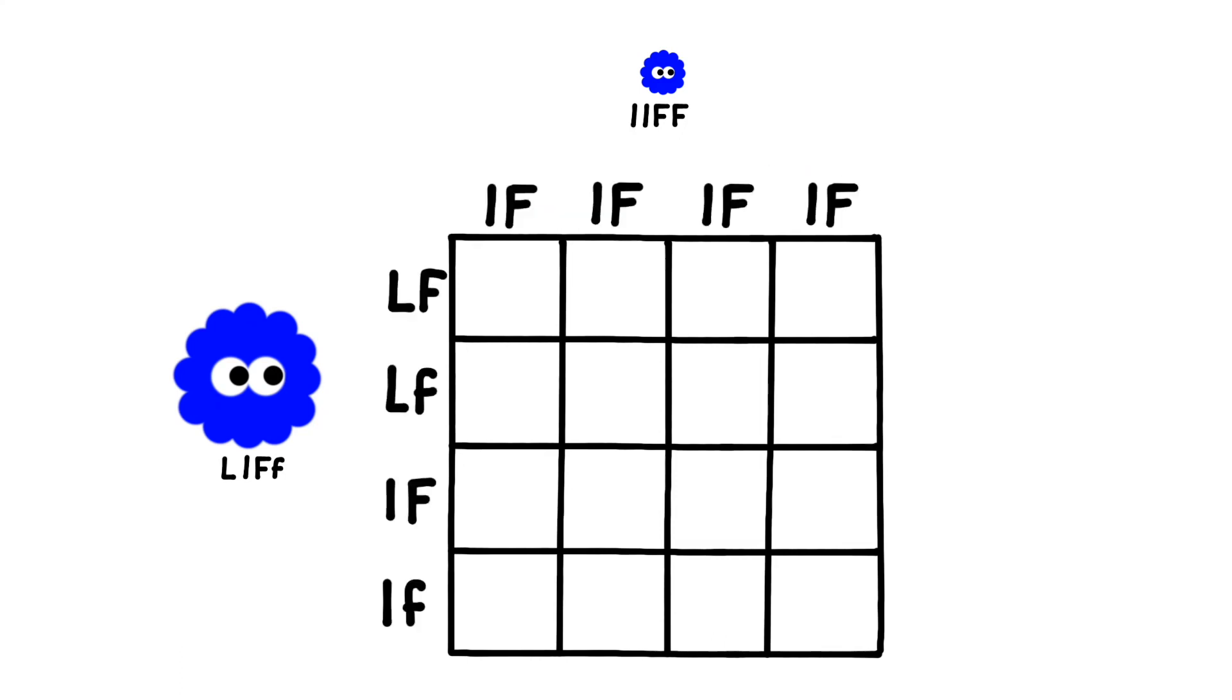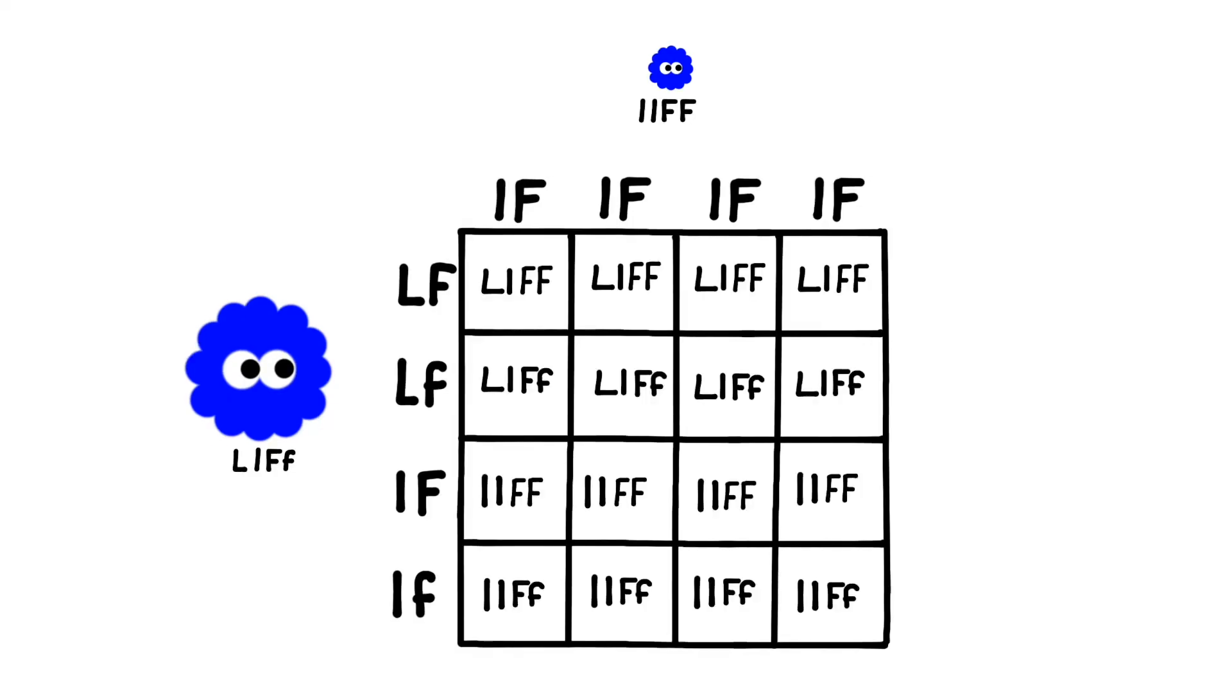Here are all the possible combinations of alleles that each parent could contribute. Now we have all the possible genotypes for their offspring.